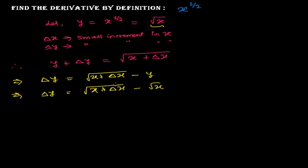Whenever we have a root, we rationalize it. Here we have minus, so I'll rationalize by multiplying by root of x plus delta x plus root x, divided by root of x plus delta x plus root x.